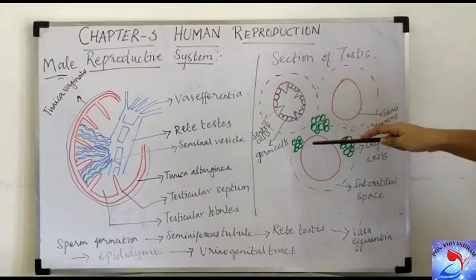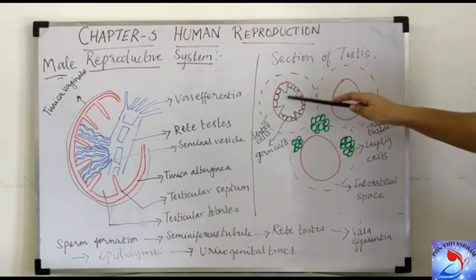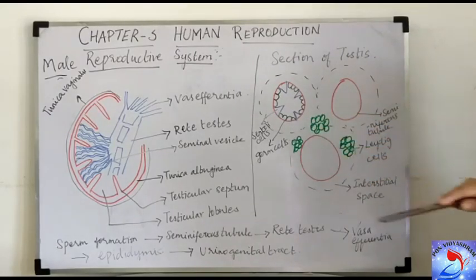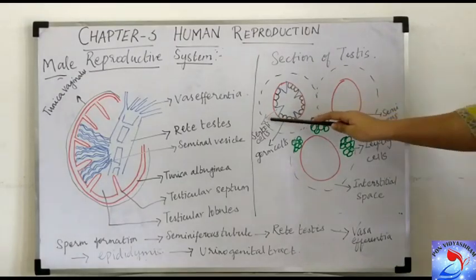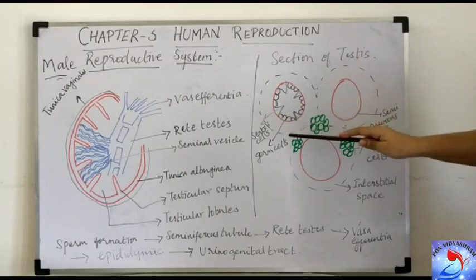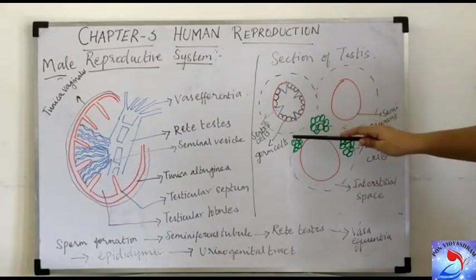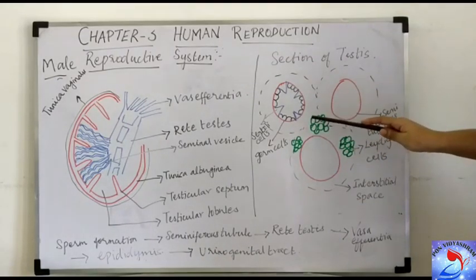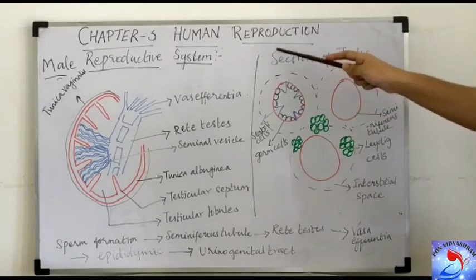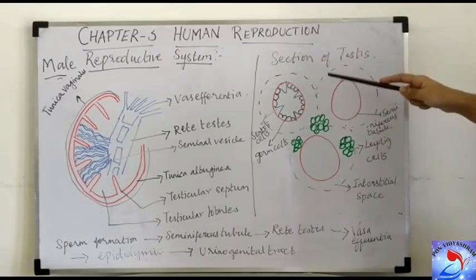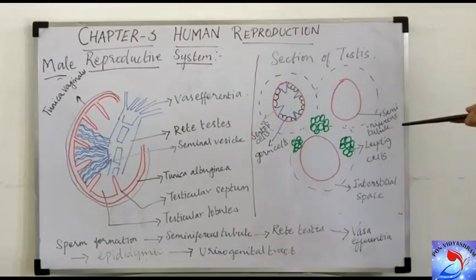The germ cells are involved in the process of spermatogenesis, while the Sertoli cells do not directly participate in spermatogenesis. The Sertoli cells are called nurse cells because they provide nourishment to the germ cells during spermatogenesis. This covers the internal structure of the testes and the cross-section of the testes. We will now move on to the secondary sex organs.